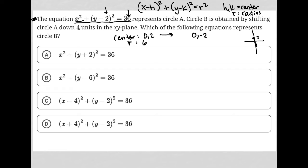So I'm shifting it down 4 units, which takes me down to negative 2 on the y-axis there. So there's my new center. But the radius shouldn't change at all based upon that.